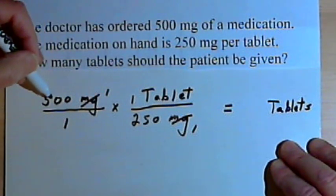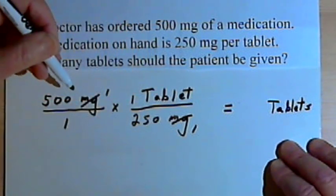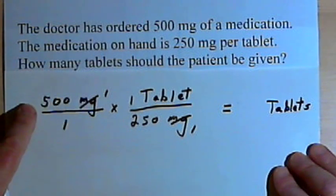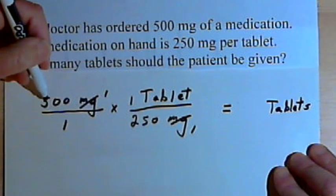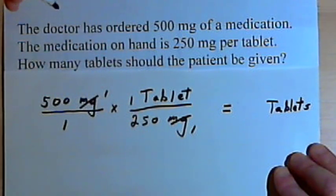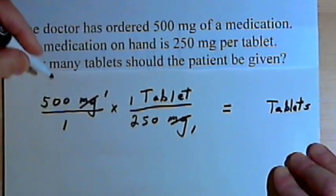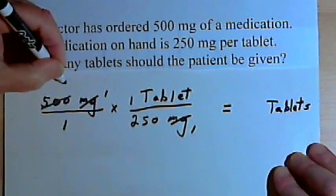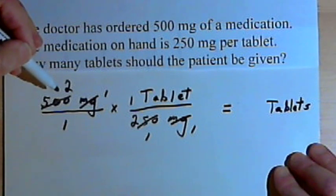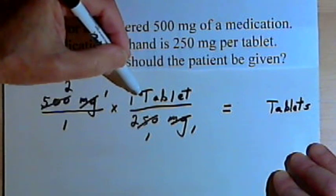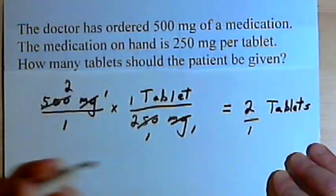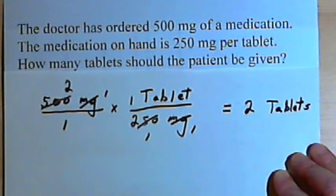Now we can multiply. We could multiply 500 times the tablets across the numerators and multiply the denominators. Instead of multiplying first, I'm going to simplify the numbers. I've got 500 in the numerator and 250 in the denominator. I can divide both by 250: 500 divided by 250 is 2, and 250 divided by 250 is 1. So now I multiply: 2 times 1 tablet is 2 tablets. The denominator is 1 times 1, which is 1, and 2 over 1 is just 2. So we end up with 2 tablets.